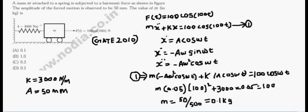The spring mass equation is M x double dot plus k x equals 100 cos(100t). The general solution is x equals A cos(omega t).